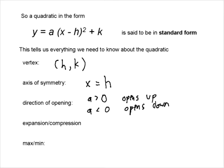What about expansion or compression? If the absolute value of a is greater than 1, meaning a is either bigger than 1 or less than negative 1, then the graph has been vertically expanded. We've stretched the graph vertically up and down, pulled on it, and made it skinnier.